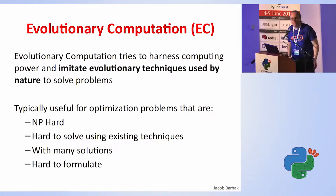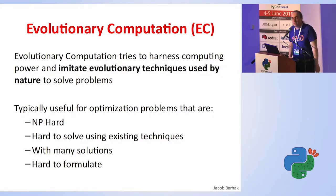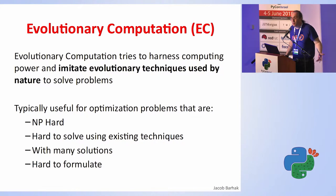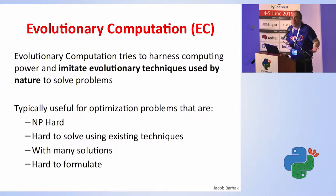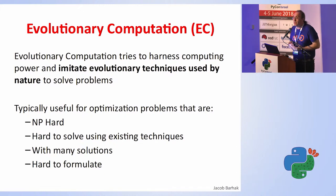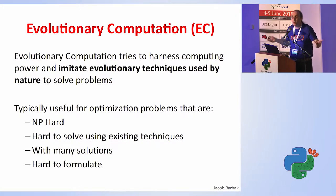For people who don't know what evolutionary computation is — some people know it as genetic algorithms — evolutionary computation expands on that a bit more. It's a set of algorithms or techniques to solve problems that are typically hard to solve, that have a large solution space, generally optimization problems. The way to solve them is just like nature evolved and created us or other species to adapt to their environment — the solutions adapt to whatever objectives we set for them.